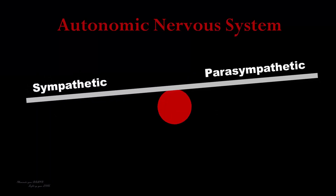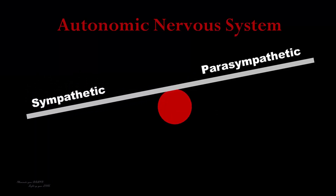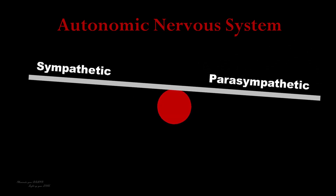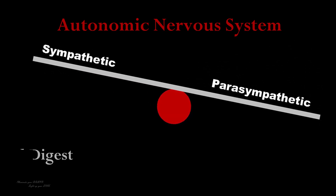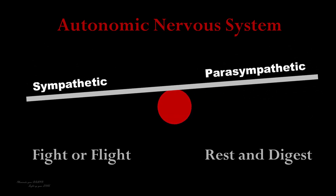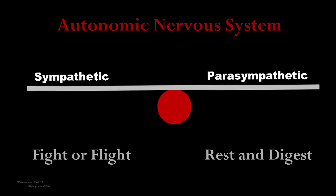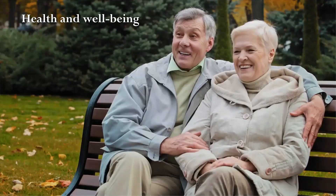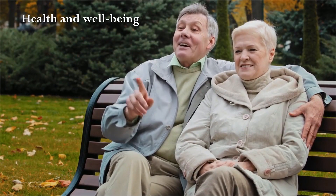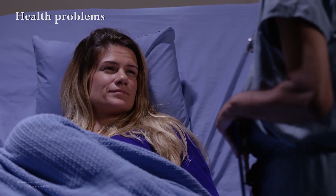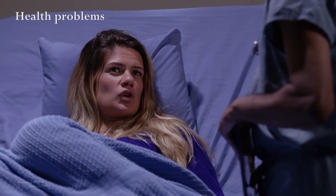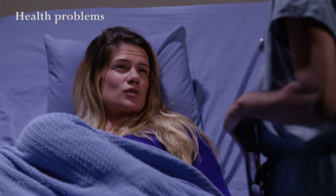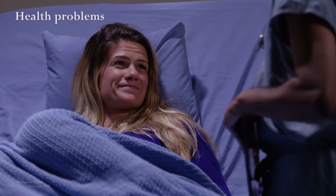The sympathetic and parasympathetic nervous systems work together to maintain a balance between the fight-or-flight and the rest-and-digest response. This balance is important for overall health and well-being; disruptions to this balance can contribute to a range of health problems.